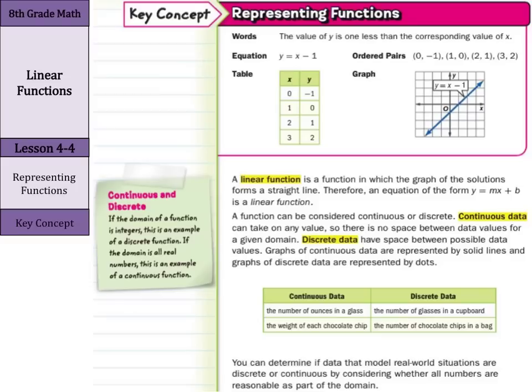An example of continuous data, the number of ounces in a glass, the weight of a chocolate chip. Discrete data might be the number of glasses in a cupboard. If you think about it, you're not going to have one and a half glasses in your cupboard, unless there's a broken one, but that's not the point.